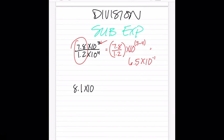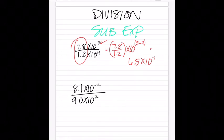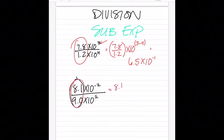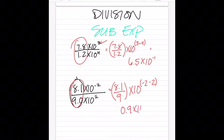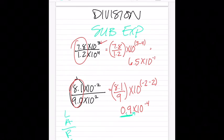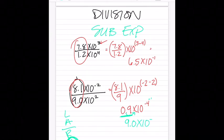Another division example: 8.1 times 10 to the negative second, divided by 9.0 times 10 to the second. Pull out: 8.1 divided by 9, and subtract exponents: negative 2 minus 2. That gives 0.9 times 10 to the negative fourth. But 0.9 is not correct scientific notation, so I move the decimal one place to the right — using LARS, right means subtract, so minus one on the exponent. Final answer: 9.0 times 10 to the negative fifth.